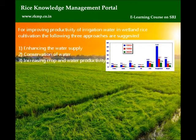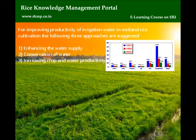For improving productivity of irrigated water in wetland rice cultivation, the following three approaches are suggested: 1. Enhancing the water supply. 2. Conservation of water. 3. Increasing crop and water productivity.